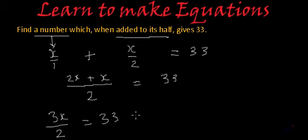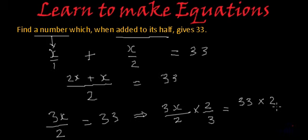So let's see what we get. We will get 3x by 2 multiplied by 2 by 3. This will give us 33 multiplied by 2 by 3. So this 3 will cancel this 3, this 2 will cancel this 2.